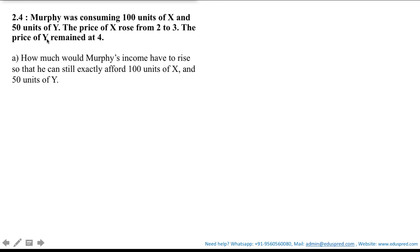With this information we are asked how much would Murphy's income have to rise so that he can still exactly afford 100 units of X and 50 units of Y.